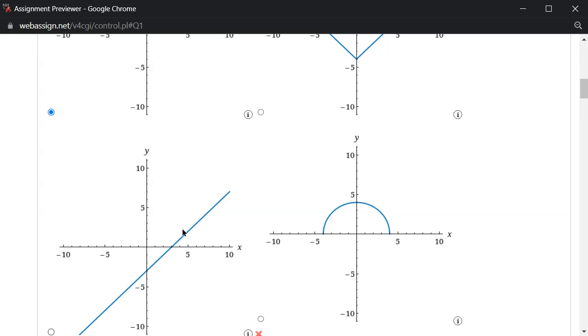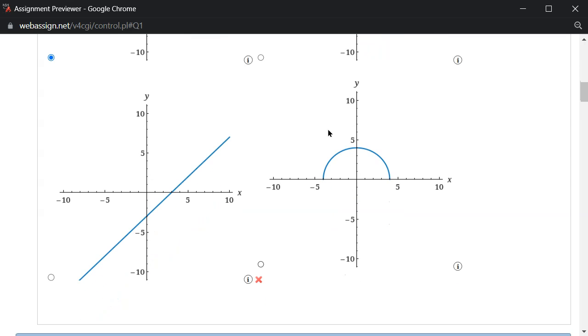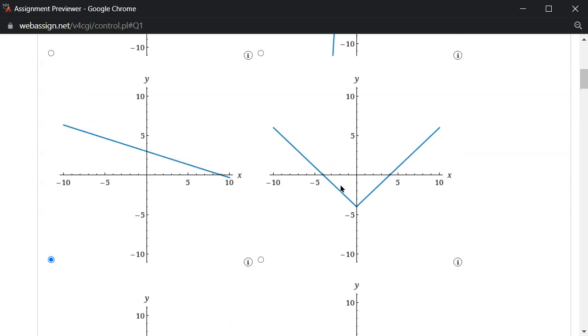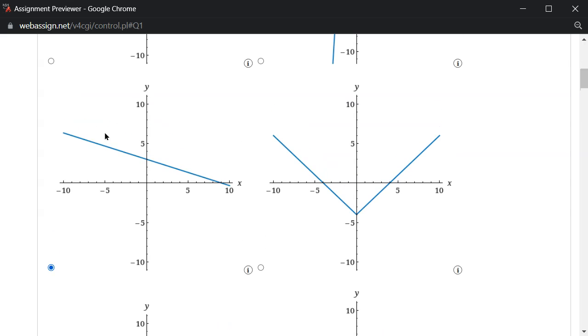This one is going up, so slope is positive on that one, and this is like a semicircle, so this is the only picture that's reasonable, right?